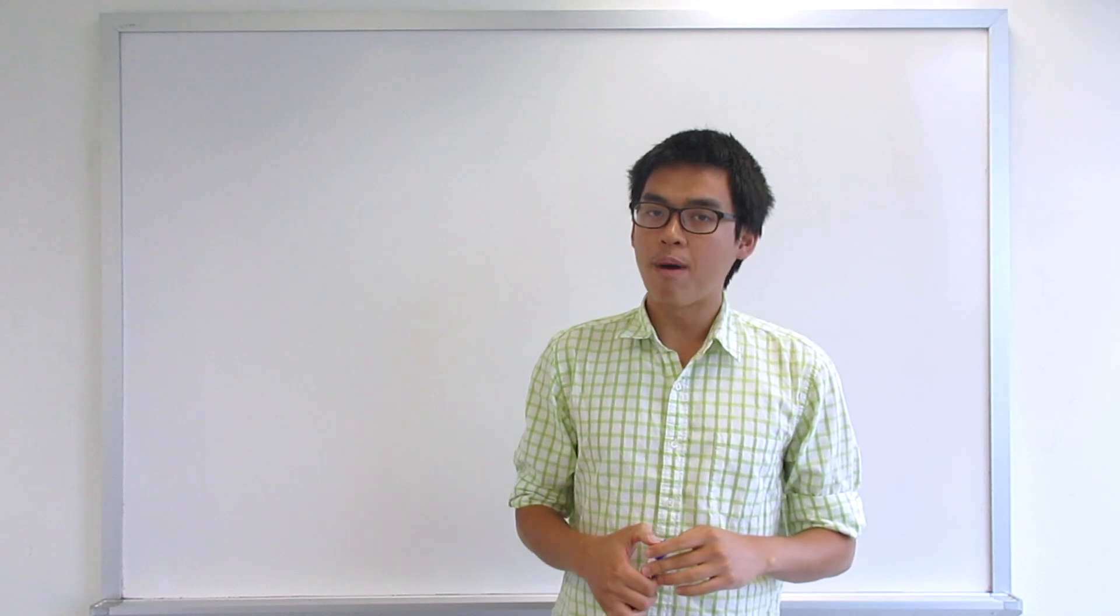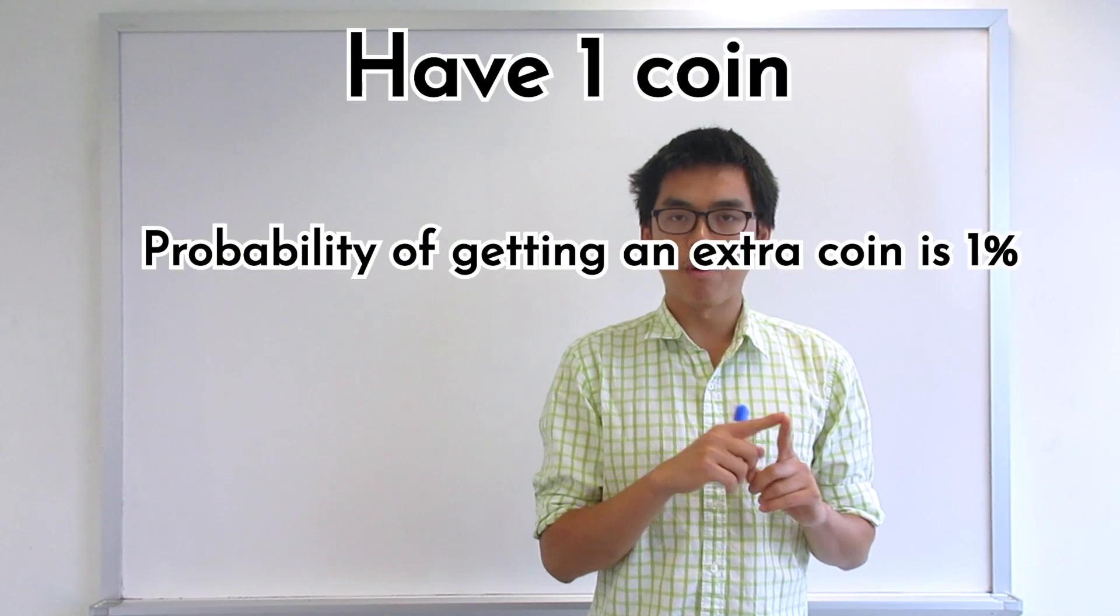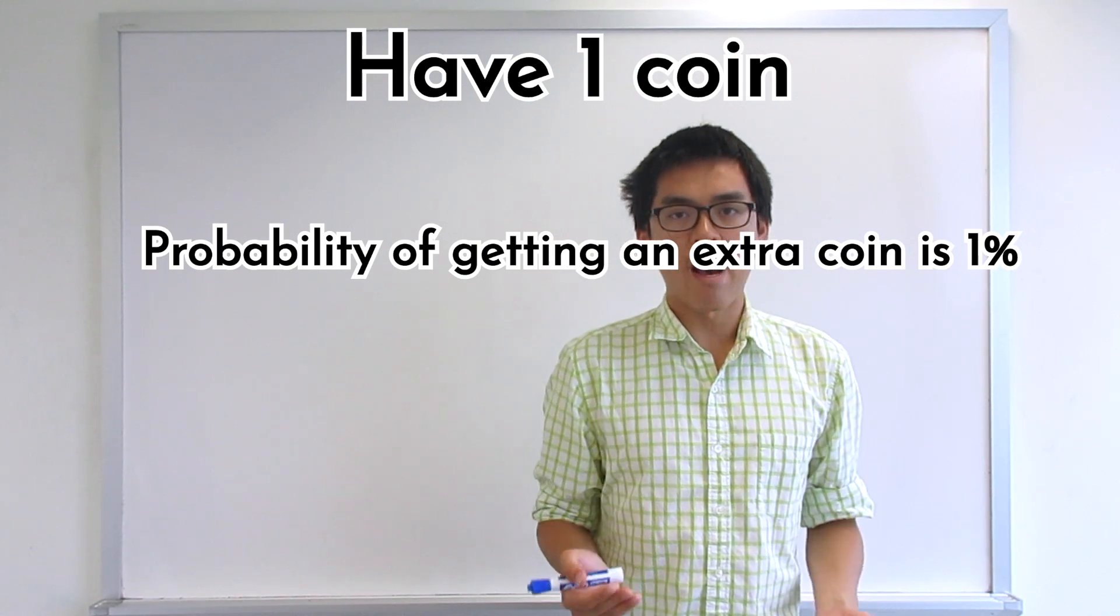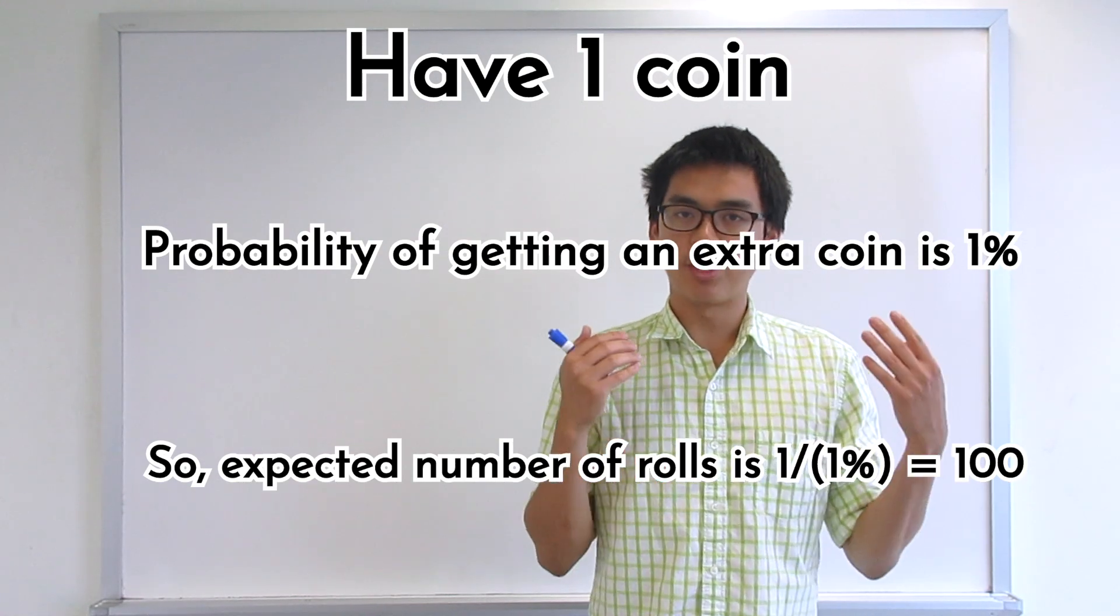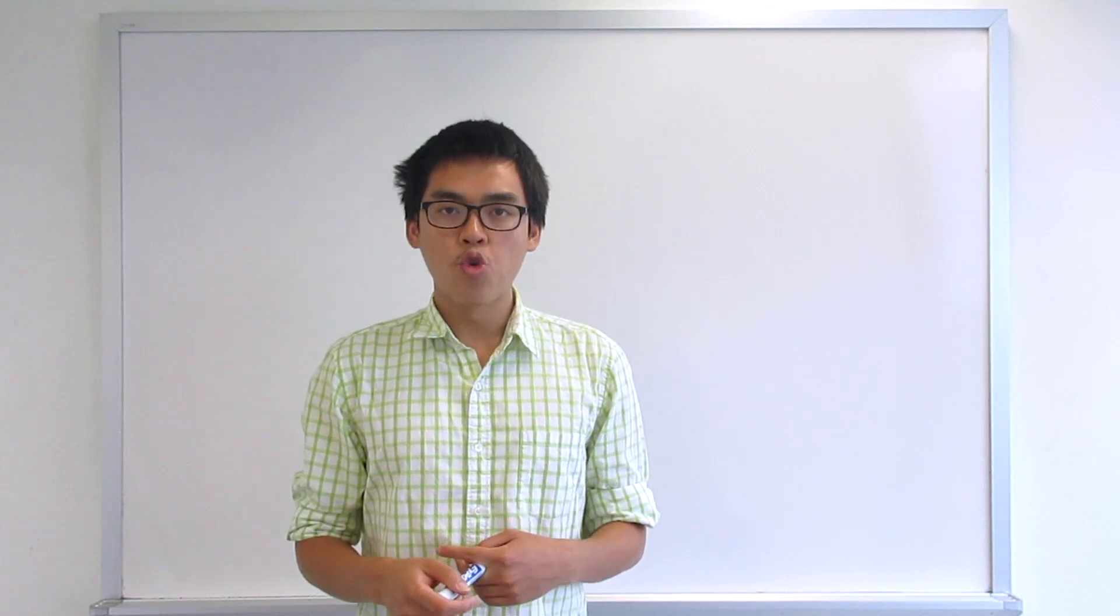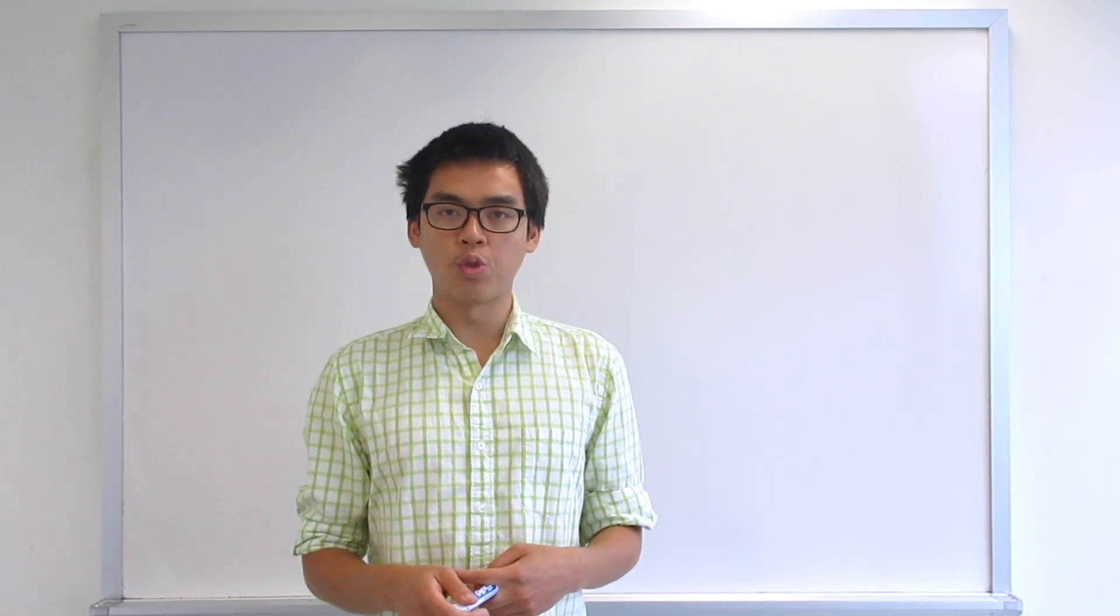With that fact, how would that help us solve the problem? Well, that's easy because you start with one coin, you have 1% chance in each round to get to 2 coins. So the number of rounds you expected to run is 1 over 1%, which is just 100. So the answer to the simplified version of the problem is you are expected to play the game 100 rounds in order to move from 1 to 2 coins.